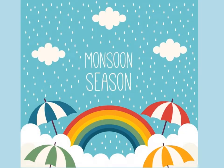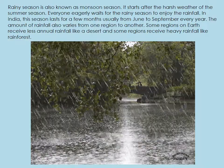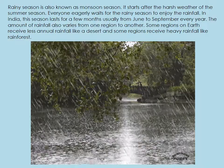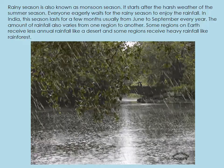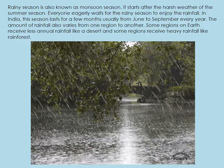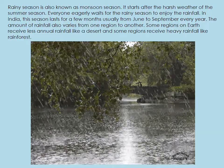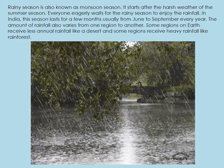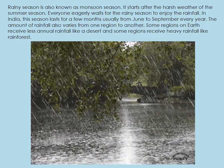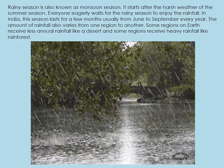We are going to talk about monsoon season. Rainy season is also known as monsoon season. It starts after the harsh weather of the summer season. Everyone eagerly waits for the rainy season to enjoy the rainfall. In India, this season lasts for a few months, usually from June to September every year.